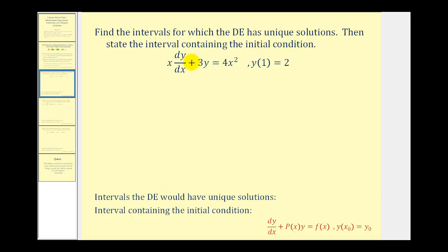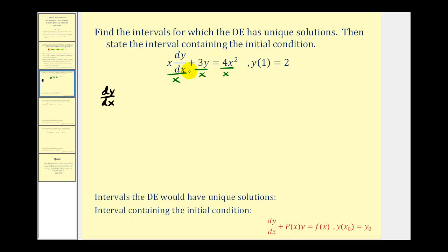We want to find the intervals for which the differential equation has unique solutions, then state the interval containing the initial condition. First, recognize that we have a linear first order differential equation, but it is not currently in the correct form. We want our first term to be dy/dx, so we divide everything by x. This gives us dy/dx plus three divided by x times y, equals four x.